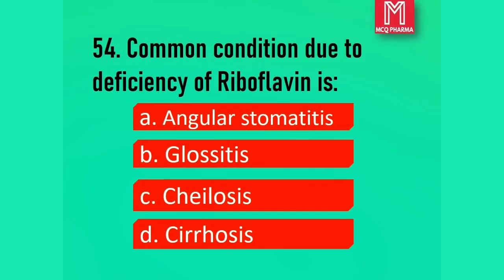Question number 54. Common condition due to deficiency of riboflavin is: Option A, Angular stomatitis. Option B, Glossitis. Option C, Tilosis. Option D, Cirrhosis. Correct answer: Option B, Glossitis. Glossitis is the redness and inflammation of the tongue due to deficiency of vitamin B2.